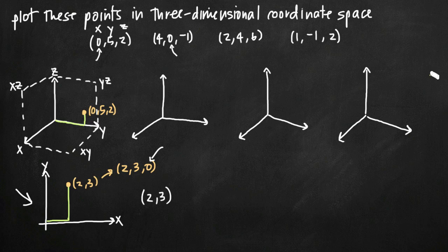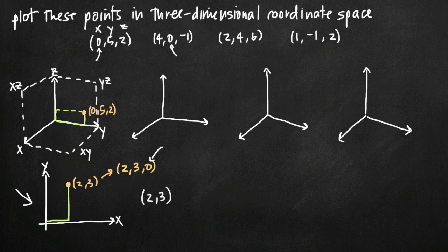What I like to do sometimes, just to clarify, is draw corresponding parallel lines to make a rectangle. Because this point lies in one of our coordinate planes, we see a rectangle here — our last two points that don't lie in coordinate planes will produce a box. Drawing a rectangle like this that goes out to the point helps us visualize exactly where it is in three-dimensional space.